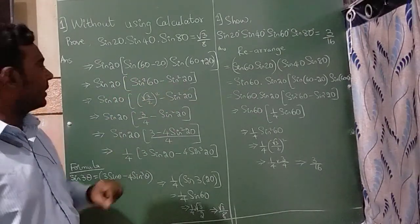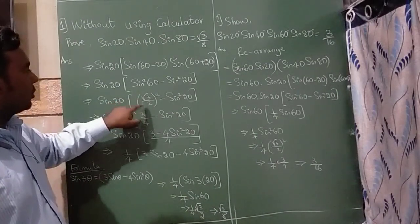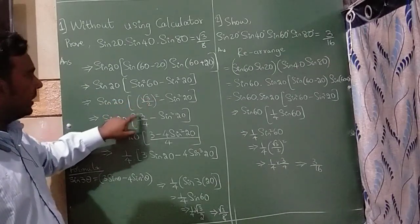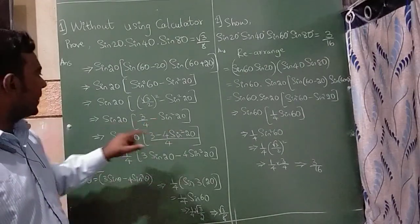Sin 60 is the standard angle, so we already know the value of that root 3 by 2, so root 3 by 2 square, so root and square get cancelled, you are left with 3, 2 square is 4, so 3 by 4 minus sin square 20.